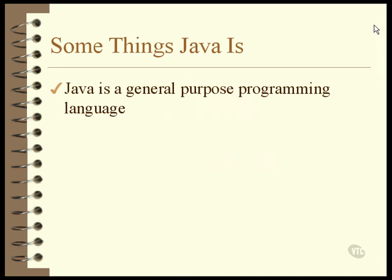microwave ovens, and VCRs, but these are just specific applications of the same general purpose language. It can be used to produce animated applets that dance around in a web browser, and we're going to be doing that in just a little while, but that's just another application of Java as a general purpose language. Any program that can be written in any language can also be written in Java.